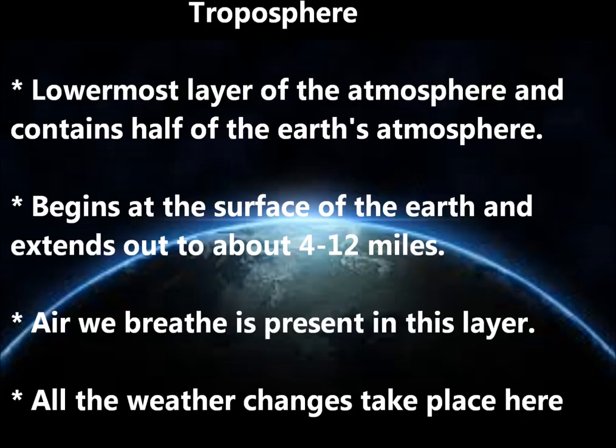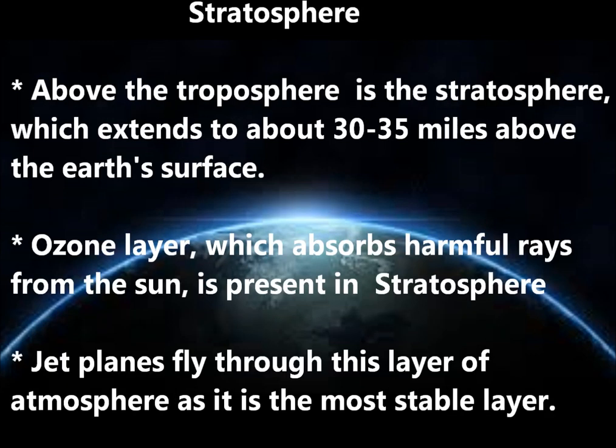The Troposphere is the lowermost layer of the atmosphere, and it contains half of the Earth's atmosphere. It begins at the surface of the Earth and extends out to about 4–12 miles. The air we breathe is present in this layer, and all weather changes take place here.